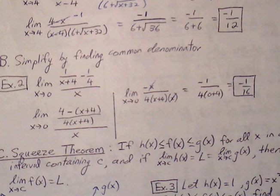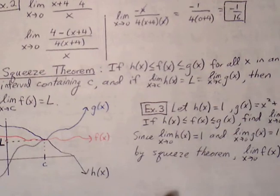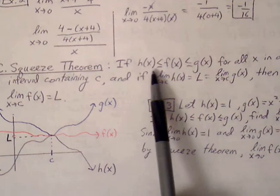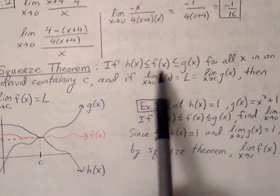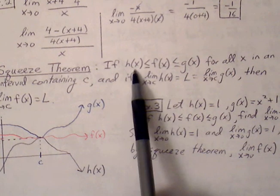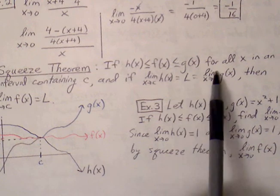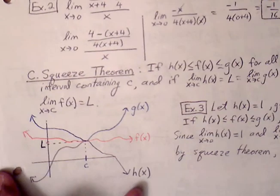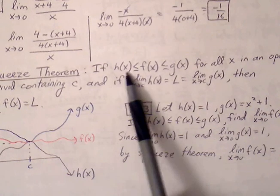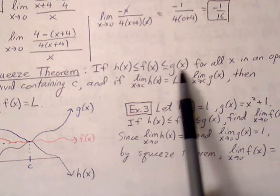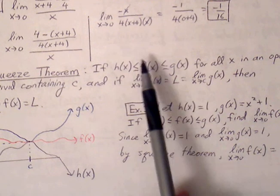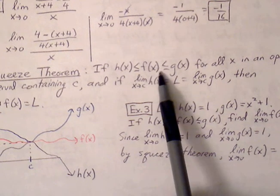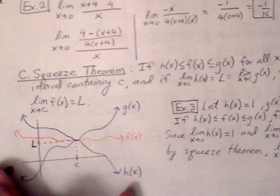One more topic from this section is the Squeeze Theorem. The Squeeze Theorem says that if we have three functions where the middle function f(x) is always between a lower function h(x) and an upper function g(x) for all x in an interval containing c, and if the limits of h(x) and g(x) as x approaches c both approach the same y value, then the middle function must also approach that same y value.